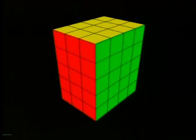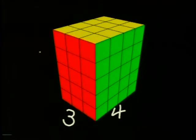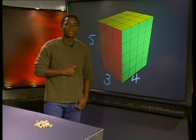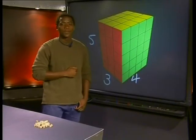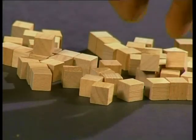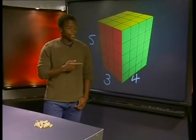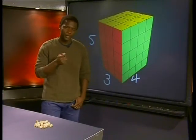One edge of the structure has a length of three unit cubes, another edge is four unit cubes long, and the third edge is five unit cubes long. If I construct the same prism with these unit blocks, can you count the number of units that this right rectangular prism contains?